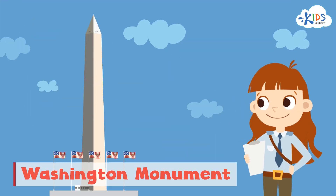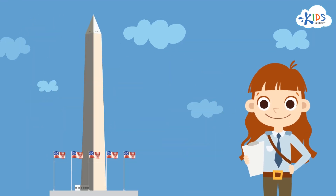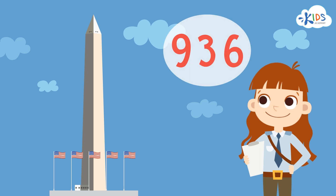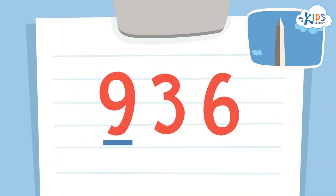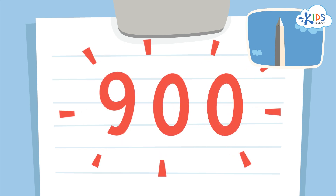First, we'll check out the Washington Monument, one of my favorite landmarks. According to the data, 936 people have visited the Washington Monument. Let's round this number to the nearest hundred. We'll use the strategy of underlining the hundreds place and drawing an arrow to the tens place so we know what numbers we have to look at. I see a 3 in the tens place. I know if it's 4 or lower, we have to round down. The 9 in the hundreds place is underlined, so we have to round down 936 to 900. When rounding to the hundreds place, the numbers in the tens and ones places become zeros.